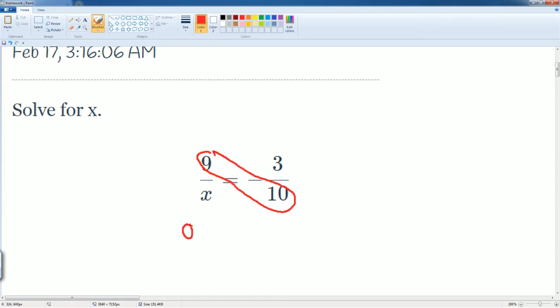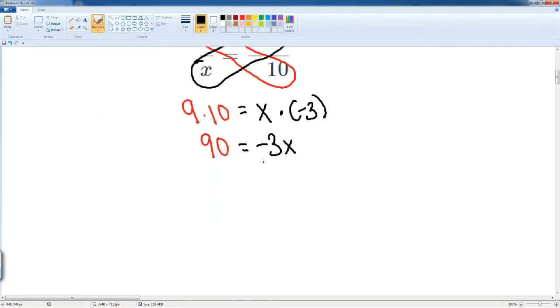So 9 is going to be multiplied by 10, which is equal to x multiplied by negative 3. So x times negative 3, the negative has to be somewhere and I only brought up the negative with the 3. 9 times 10 gets you 90, and that's going to be equal to negative 3x.